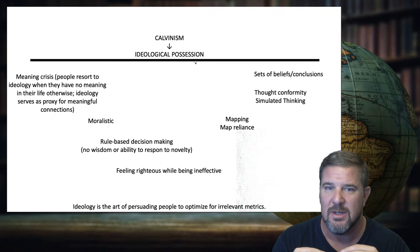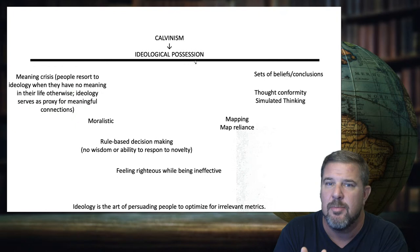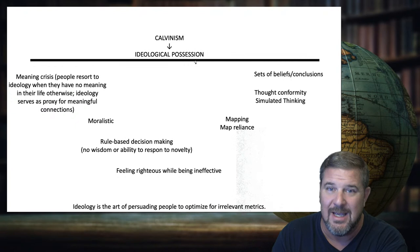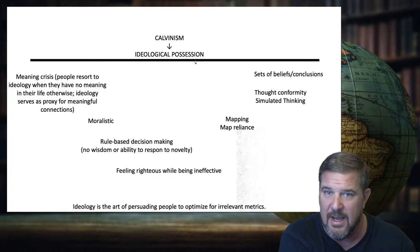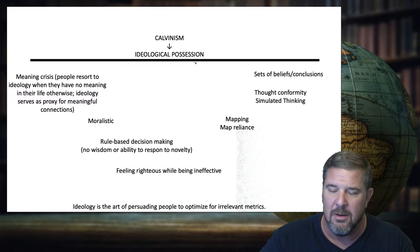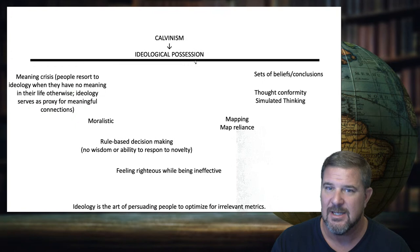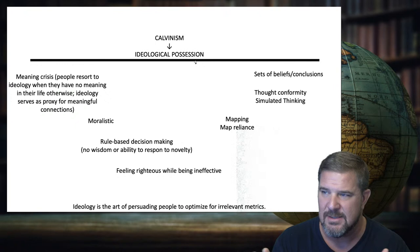James Lindsay, Peter Boghossian, and Helen Pluckrose have drawn connections between the original sin of white privilege in critical race theory and Calvinism's total depravity — both things that cannot be absolved. These are two parallel ideological possession phenomena that are both religious in nature. Ideological possession is when something becomes religious in nature.